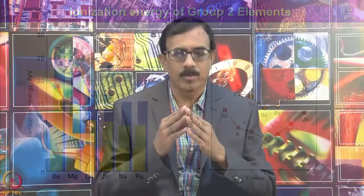Hydration enthalpy decreases down the group due to the increase in ionic size. As ionic size increases down the group, the charge-to-size ratio decreases, and since hydration enthalpy depends heavily on the charge-to-size ratio, it decreases accordingly.